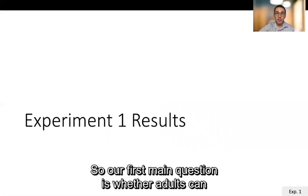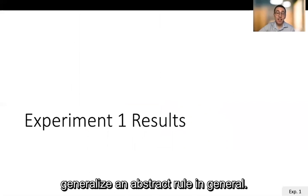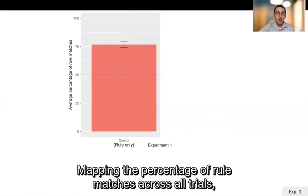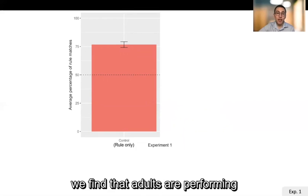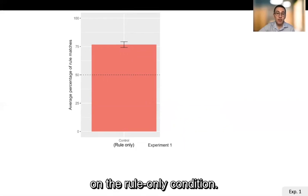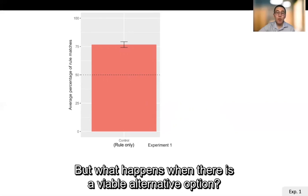So our first main question is whether adults can generalize an abstract rule in general and we find that this is indeed the case mapping the percentage of rule matches across all trials we find that adults are performing at significantly above chance levels on the rule only condition.